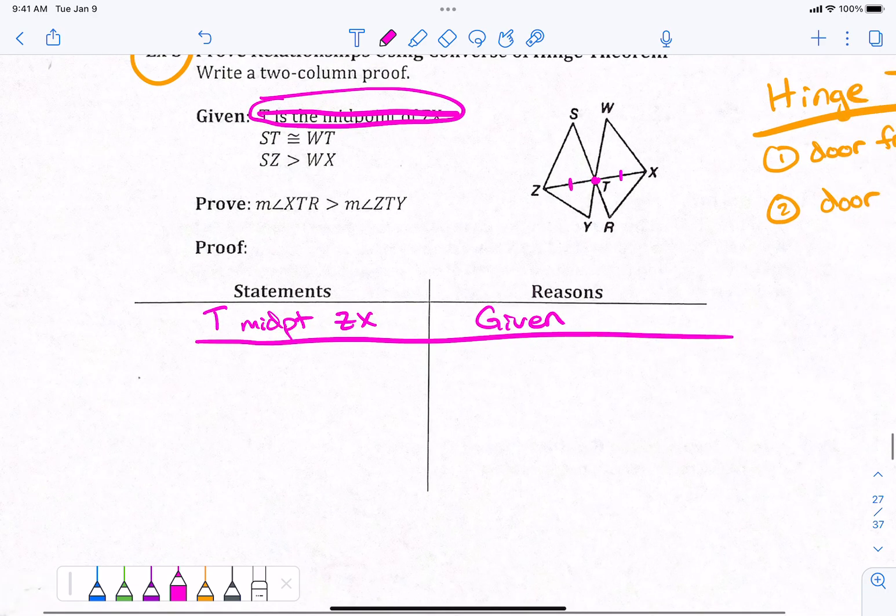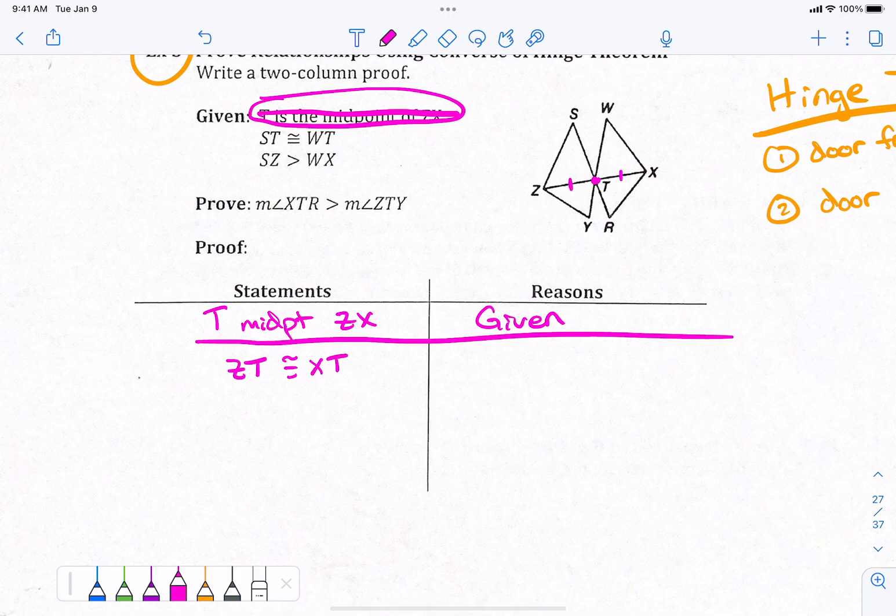So, what did you say, Josie? ZT is congruent to XT or TX. Whatever. Okay? That's the midpoint theorem. That's the midpoint theorem. All right? So, that's my first piece of given information.